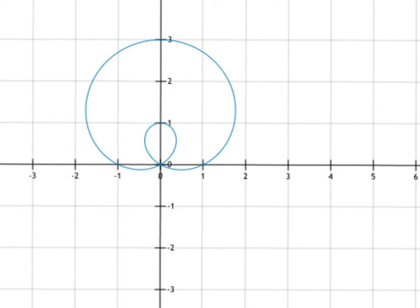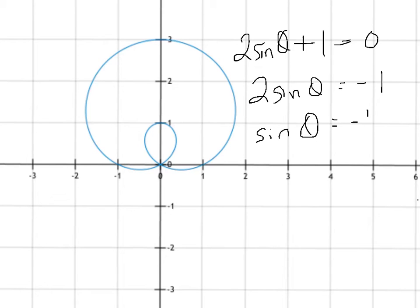To do that, we'd say 2 sine theta plus 1 equals 0. Subtract 1, we get 2 sine theta equals negative 1. Divide both sides by 2, sine theta equals negative one-half.